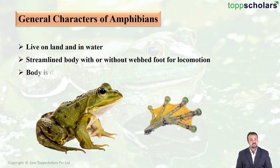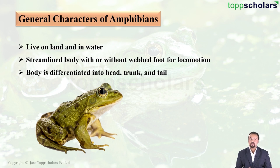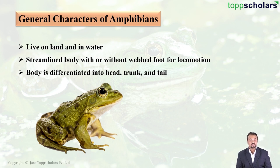Their body is differentiated into a head and trunk, as you can see. In some amphibians a tail is also present, but in the frog the tail is absent.